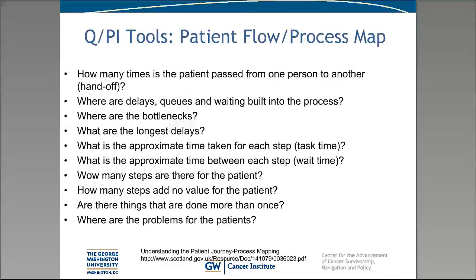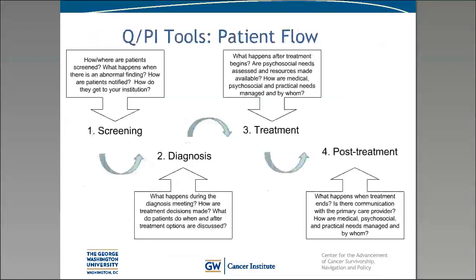The first tool is a patient flow diagram or process map — pretty much what it sounds like. You map a patient's experience across the continuum of care, whether at your institution or across a network, trying to figure out what happens to the patient to identify where there might be gaps, redundancies, or obstacles. Think about what happens at each stage: at screening, how or where are they screened? At diagnosis, what happens during and after treatment options are discussed? During treatment, are there assessments done and who is managing issues? Once treatment is done, what providers does the patient see and how is information communicated across providers?